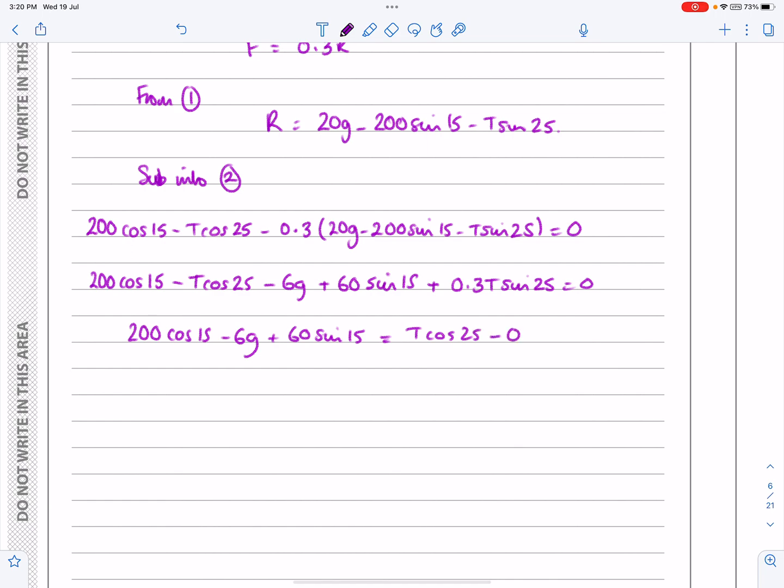minus 0.3 T sine 25 in effect all I've done is just to take that over the other side and that over the other side but doing it carefully and slowly. Now I'm going to factorise and take the T out of these bits so I'm going to get T cos 25 minus 0.3 sine 25